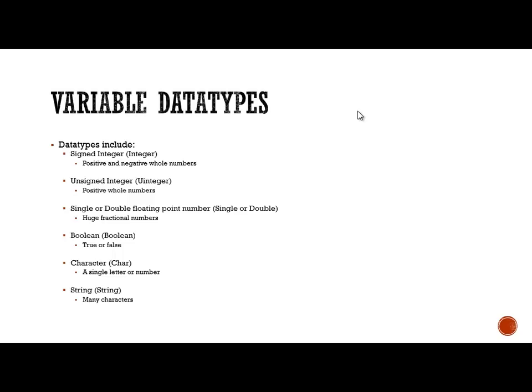Here are some of the data types that are included. The simplest is the signed integer. Remembering that in maths, an integer is a whole number — so a signed integer can be a positive or a negative whole number. The flip side is the unsigned integer: not having a sign means it can only be positive whole numbers. In Visual Basic, these are known as integer and uinteger respectively.